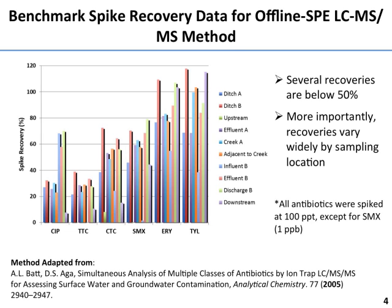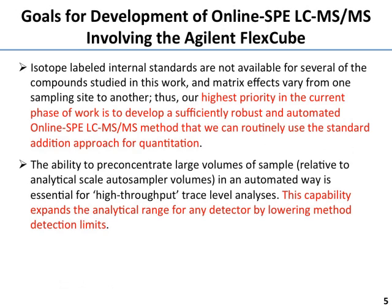We had, prior to our involvement with Agilent, started looking at an online SPE as a way to get around this, because we were finding that we were losing a lot of these compounds during the sample reconstitution process after SPE, solvent evaporation, and things like that. Because these recoveries and matrix effects vary a lot site by site, we're really interested in using the standard addition approach to quantitation, and the ease of use and extent to which you can automate the process makes quantitation by standard addition more feasible.